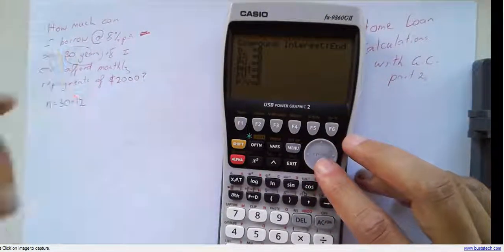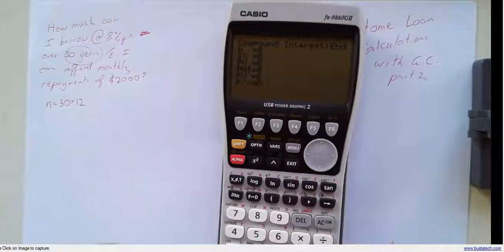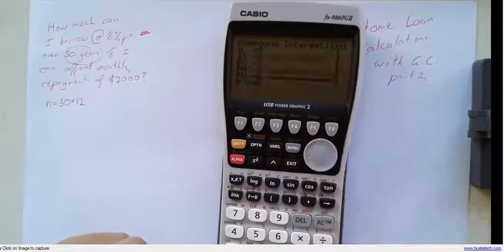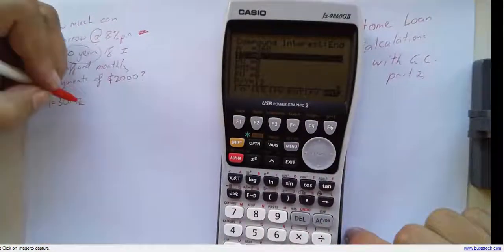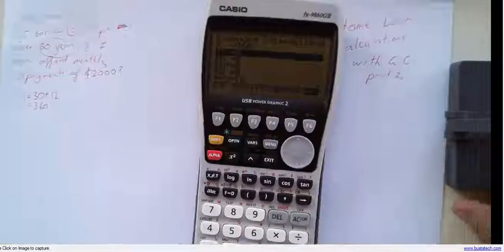Now, N is the number of periods. Remember that's number of compounding periods. So it's 30 years times 12. So up the top there, that's 360. You can just type in 30 times 12.